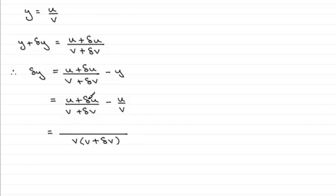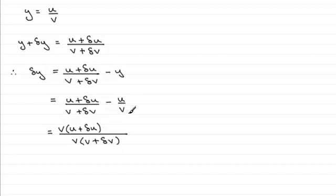To convert the first fraction to this common denominator, I multiply top and bottom by v, giving v multiplied by u plus delta u on the numerator. For the second fraction, I multiply top and bottom by v plus delta v, giving minus u multiplied by v plus delta v.